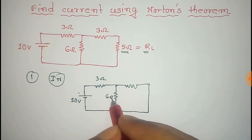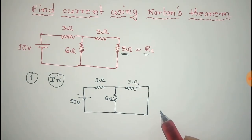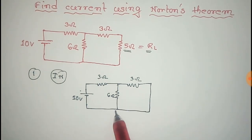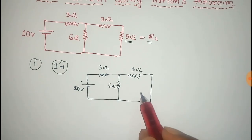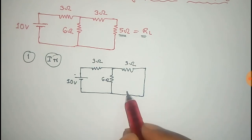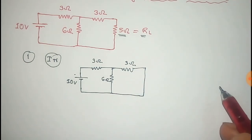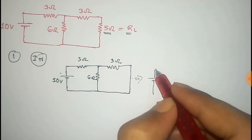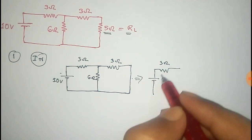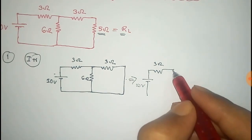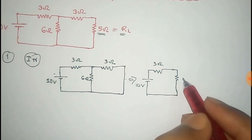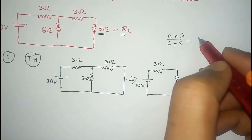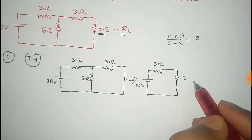That is 3 ohm, 6 ohm, and 3 ohm. Now we have to find the short circuit current along this loop. We can see that the 6 ohm and 3 ohm resistors are in parallel connection, so we can replace them with a single resistor. That parallel combination has a value of 6 into 3 divided by 6 plus 3, which equals 2 ohm.